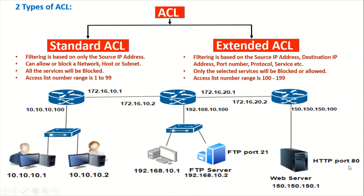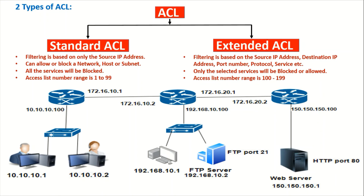Whenever any user from this network tries to access this web server for HTTP traffic on port 80, the traffic will be allowed. Now consider there is another application on the same server running HTTPS on port 443. Whenever a user tries to access that application using port 443 and HTTPS, the packet would be denied, because the existing rule only allows access using port 80 for HTTP — there is no rule written to allow HTTPS on port 443.